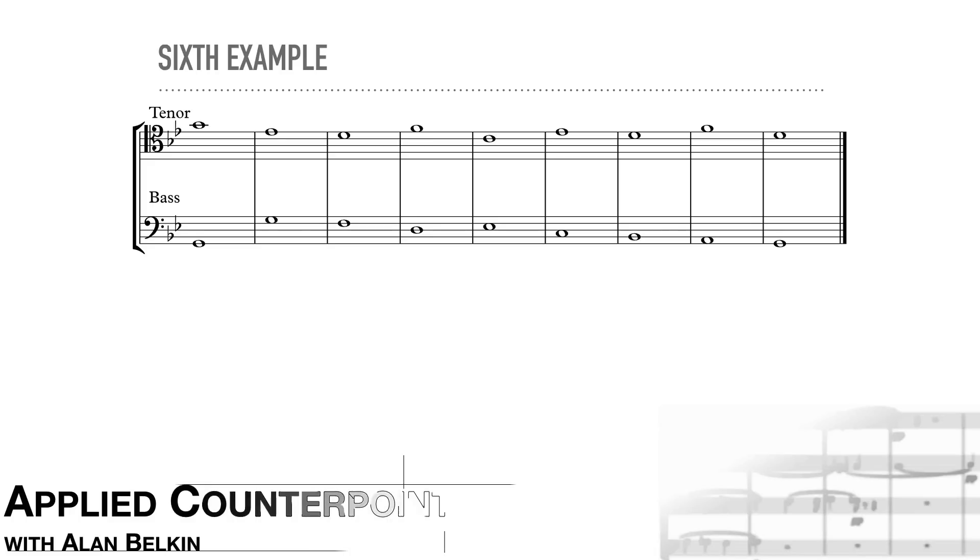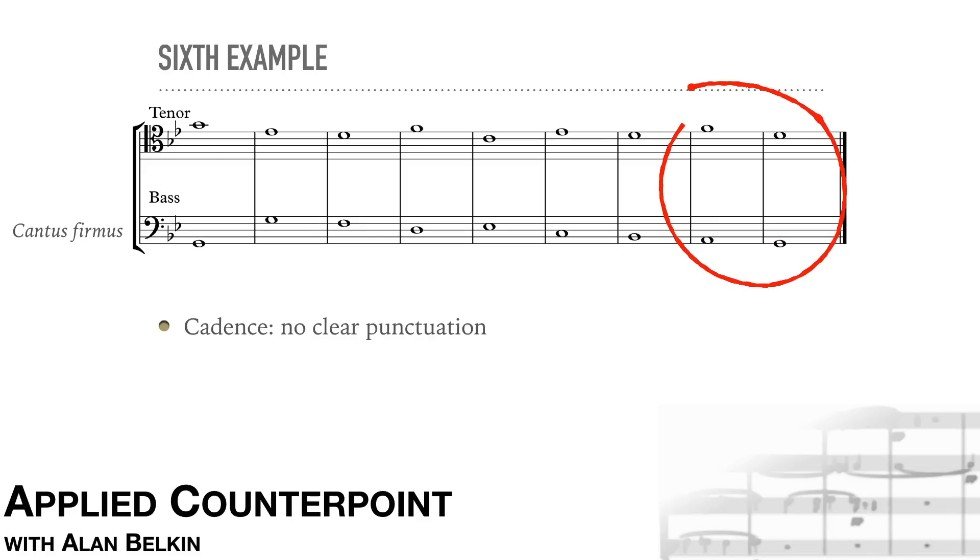Now a last example with a new cantus. The problem here is that the cadence is not convincing. The cadence needs to create clear punctuation. Here the F natural before the end contradicts the G minor tonality. Even in G melodic minor, the F should descend stepwise, and the direct fifth into the last chord doesn't help either.